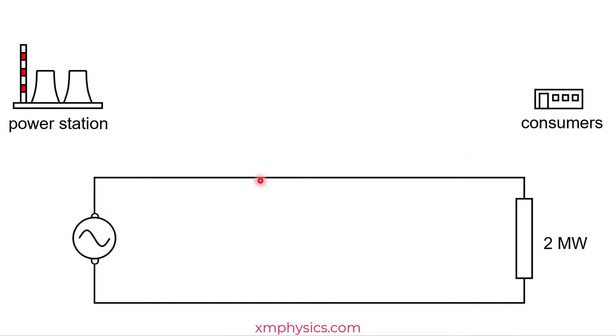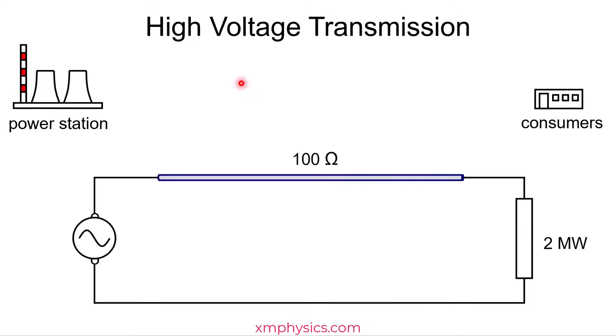So let's say to connect the power station to consumers we are using a power cable with a resistance of 100 ohms. Now let's say we are using high voltage transmission, so we are using a relatively high voltage of 500 kilovolts. Then to deliver 2 megawatts here requires a current of 4 amps. Do you realize that these 4 amps has to run through these 100 ohms?